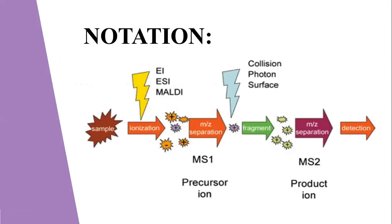Regarding the notation of tandem mass spectrometry, the whole sample is first ionized and changed into a precursor ion. After the separation and fragmentation process—by the collision of photons on the surface of the precursor ion—it is changed into a product ion (MS2), which is separated on the basis of m/z ratio, detected, and shown on screen as graphs.